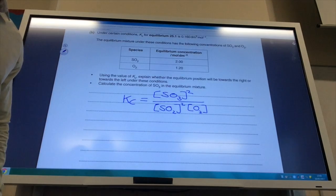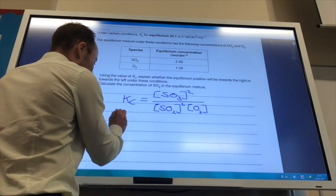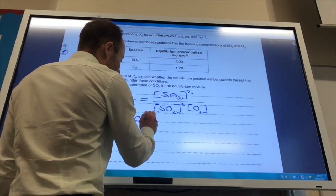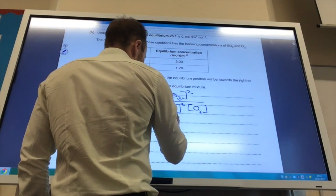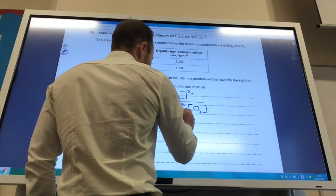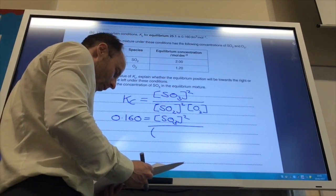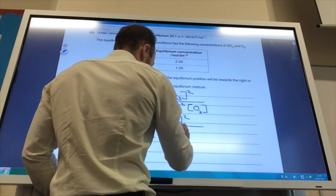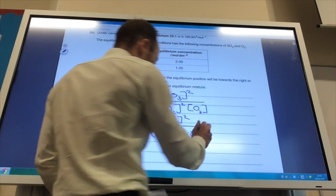Right, so let's pop some numbers into this now. Now, Kc, they told me, is 0.160. They want me to find the concentration of SO3, so I don't know that. But I do know the concentration of SO2, which is 2. And I do know the concentration of oxygen, which is 1.2.